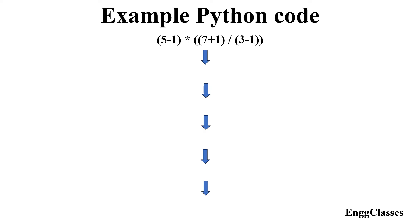The question is: which operator is performed first? Parentheses are used to override the usual precedence. We have three sets of parentheses, and they are evaluated from left to right. So (5 - 1) is performed first, giving 4. The rest of the expression is kept as is.